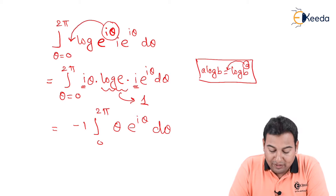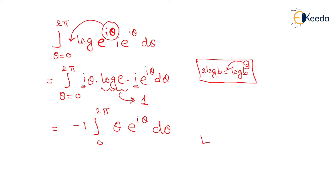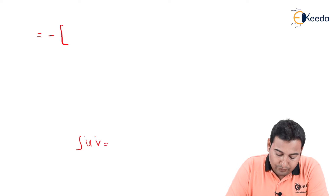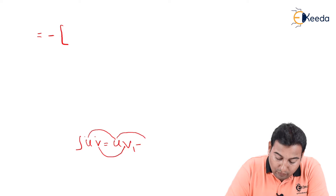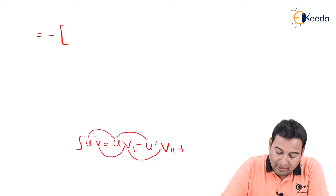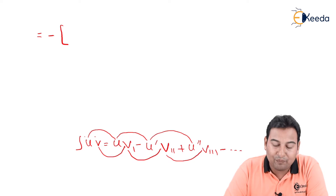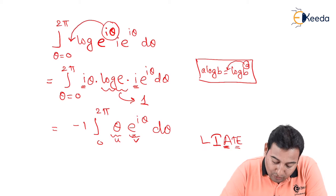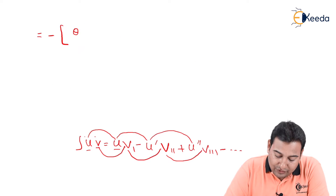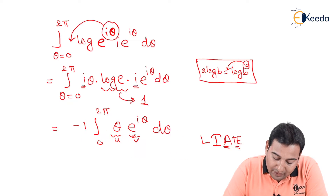We now apply integration by parts using the LIATE rule — Logarithmic, Inverse, Algebraic, Trigonometric, Exponential. Here θ is the algebraic term (u) and e^(iθ) is the exponential term (v). The rule is: u·∫v − ∫(u'·∫v). So u = θ remains as is, and we integrate v = e^(iθ).